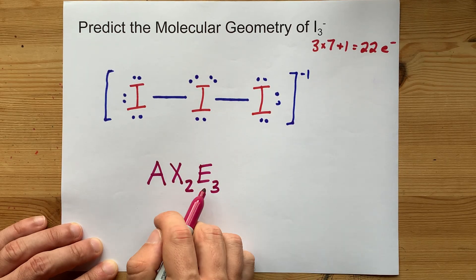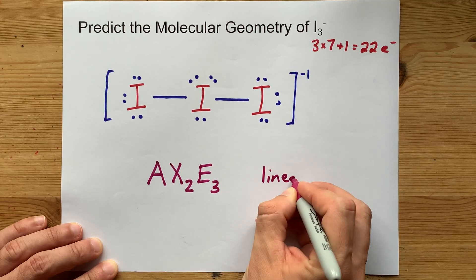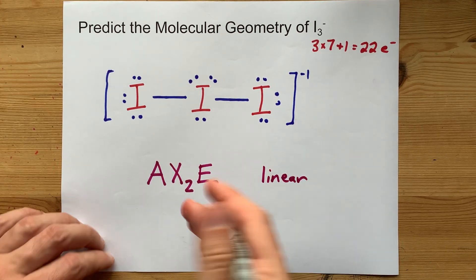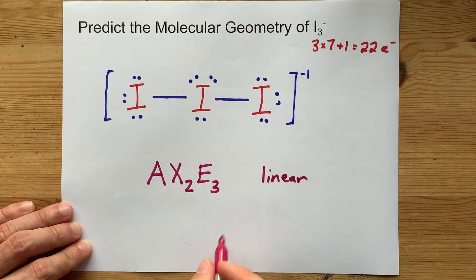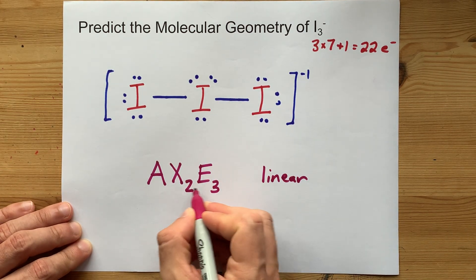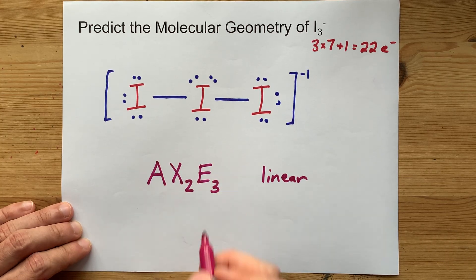Now, you may just know what the shape of that is. P.S., it is linear. But you can also think about it as coming from trigonal bipyramidal. There are five things around the center atom, two bonds and three lone pairs.